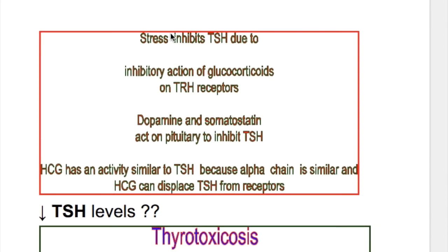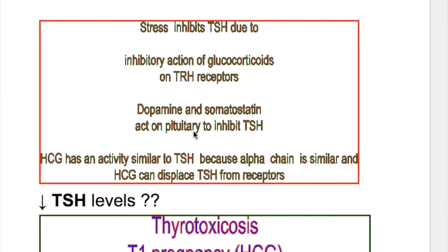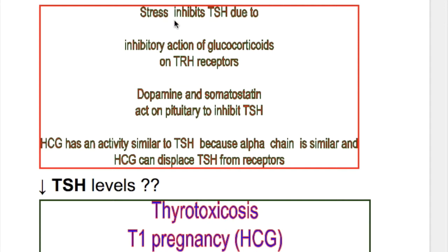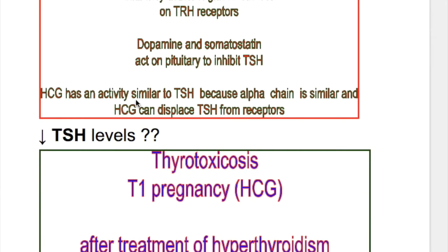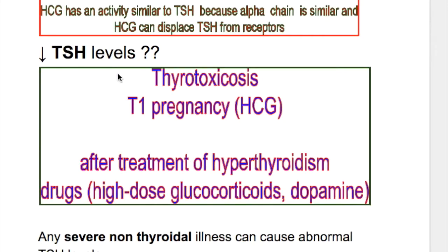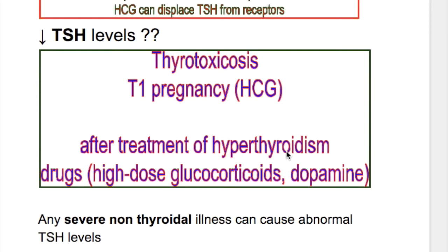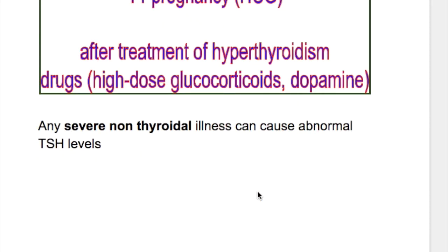Stress inhibits TSH due to the inhibitory action of glucocorticoids on TRH receptors. Dopamine and somatostatin act on the pituitary to inhibit TSH directly. HCG has activity similar to TSH because the alpha chain is similar, and HCG can displace TSH from its receptors. Conditions where TSH is reduced include thyrotoxicosis, the first trimester of pregnancy where HCG is produced, after treatment with antithyroid drugs in hyperthyroidism, and high doses of glucocorticoids and dopamine.